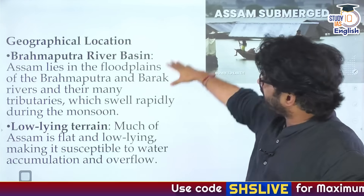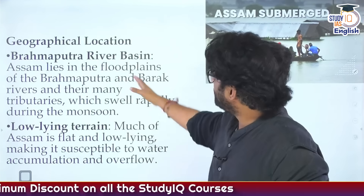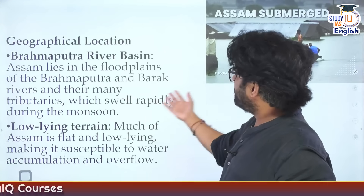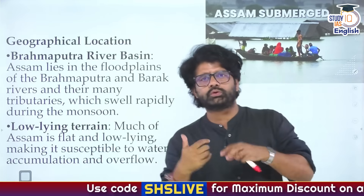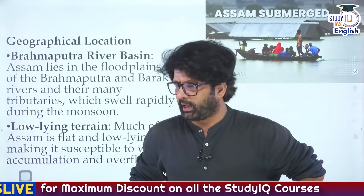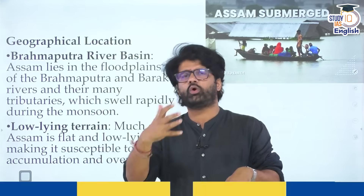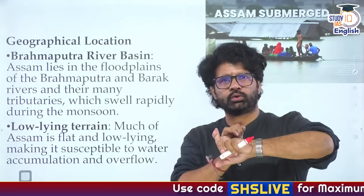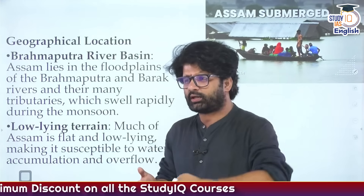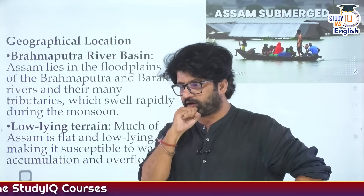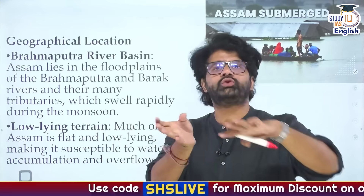Assam lies in the middle and some portion of the upper stage of Brahmaputra - that's why it faces the wrath of Brahmaputra so much. Now let's look at other geographical factors. When you read about Himalayan rivers versus Peninsular rivers: Himalayan rivers are perennial rivers while Peninsular rivers are mainly seasonal. Why? Because Himalayan rivers have two sources - glaciers and rainfall - while Peninsular rivers get their water only from rainfall.